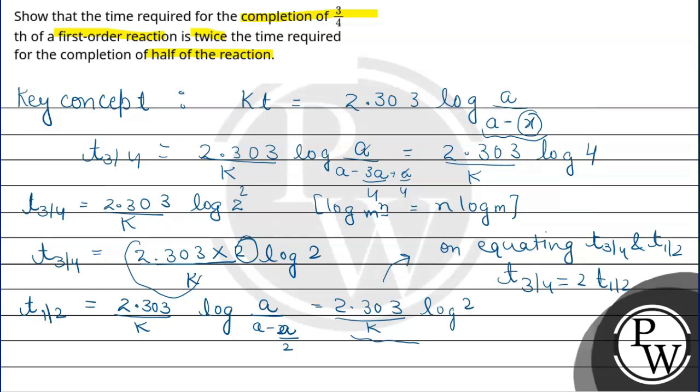We can write t3/4 = 2t1/2. I hope you understood it well. Best of luck.